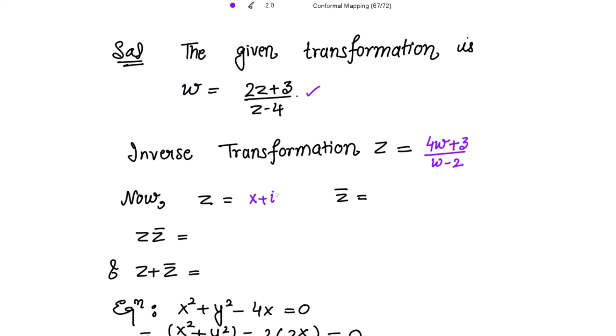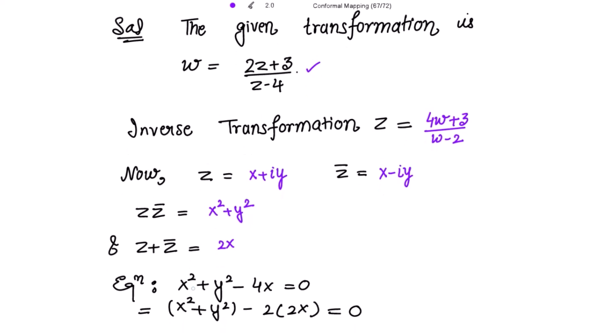Now z = x + iy, so the conjugate of z is x - iy. If we get the product of z and z̄ we get x² + y², and if we sum them we get 2x. The given equation of the circle is x² + y² - 4x = 0.